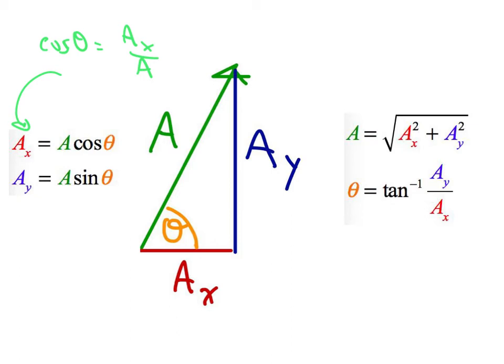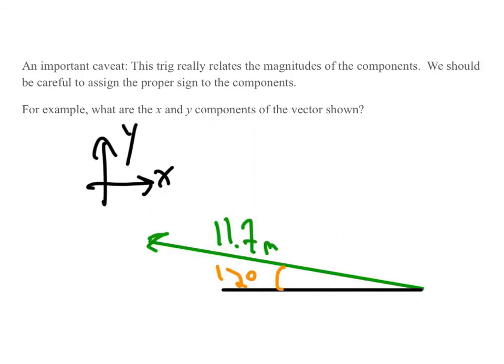By the way, we should be careful here though, because here I've drawn a triangle and since I'm in the first quadrant, I'm okay. All the sides are positive. But you know that if we had a vector going this way and we talked about its components, then a_x, the component, would be negative. And so we need to be careful about that. An important caveat: This trig really relates the magnitudes of the components. We should be careful to assign the proper signs to the components.